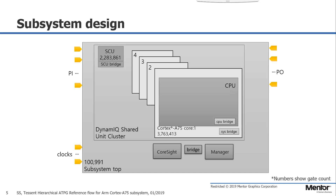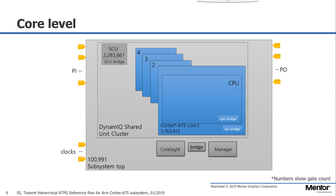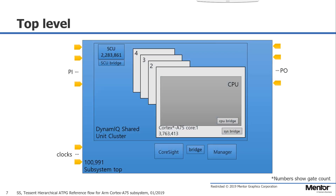We segment the Cortex core level as our hierarchical boundary to divide the design into two parts called core level and the top level. Then we can test them separately. We use such a design to show that Tessent DFT offers a high efficiency plug-and-play infrastructure to achieve the best test quality.